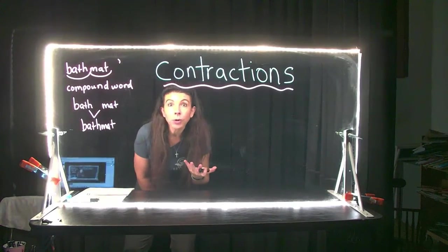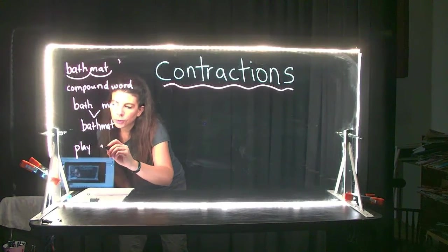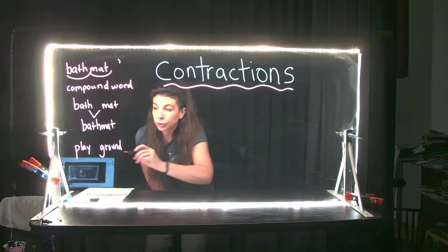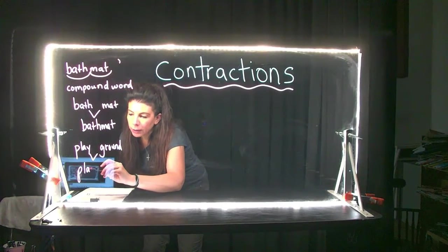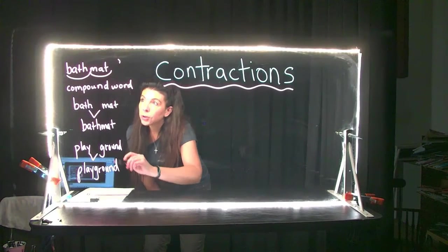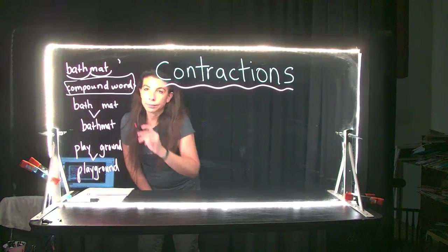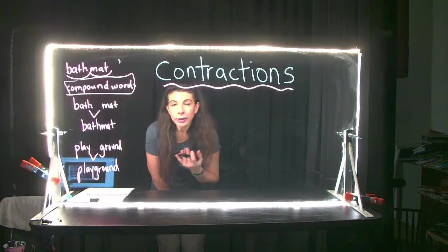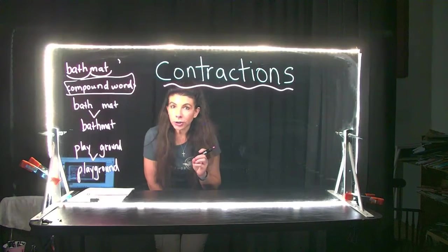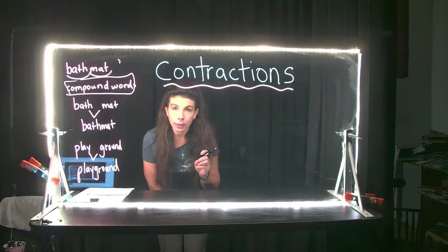Same thing with the word 'playground.' Play and ground — you put those two words together and it becomes one compound word: playground. Those are called compound words, and they are different from a contraction because with a contraction you literally take letters out of a word.